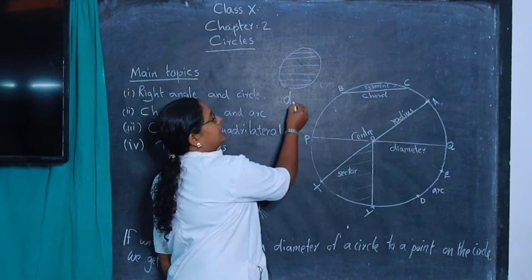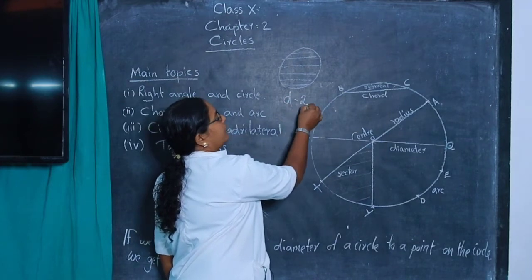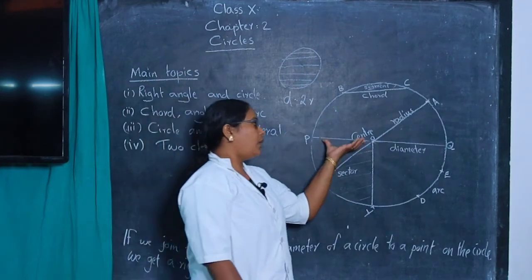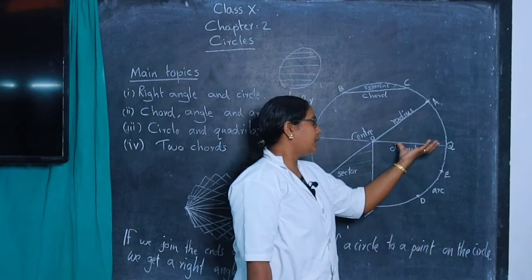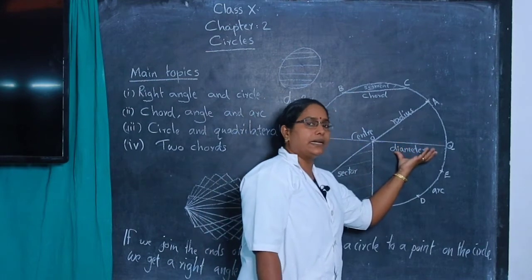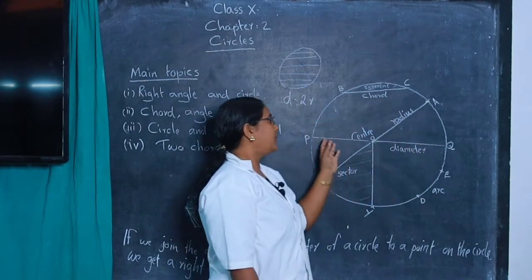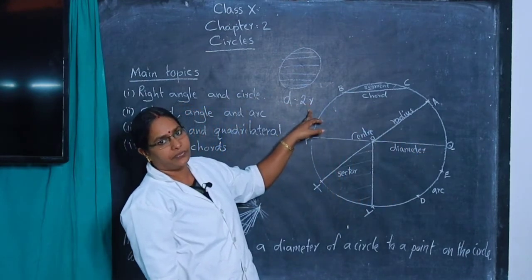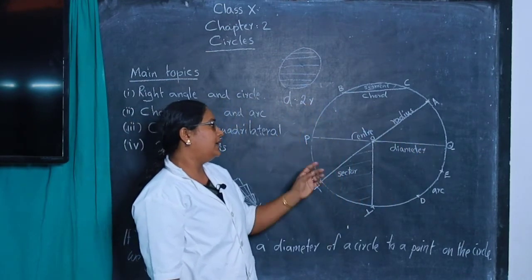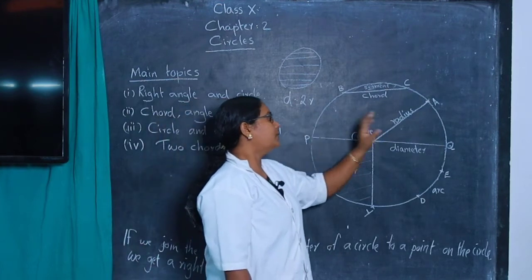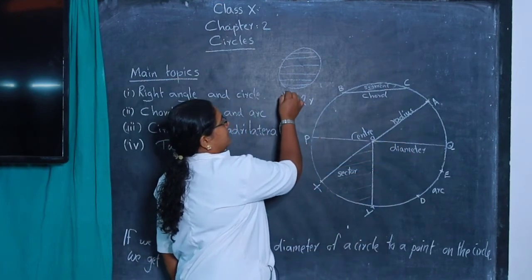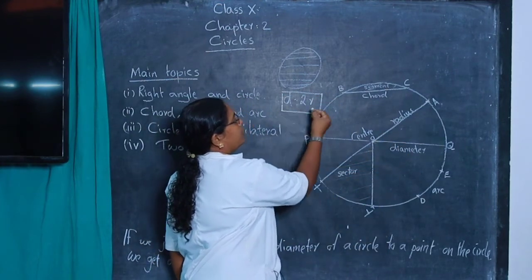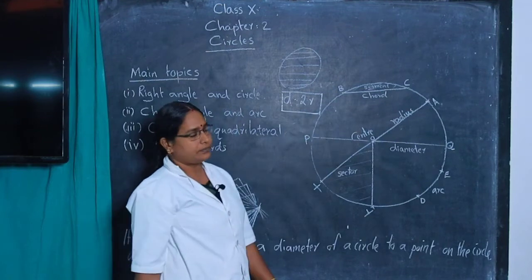Diameter is double the radius. Here, OP is a radius and OQ is a radius. Therefore, diameter is double the radius. So, diameter equals 2R.